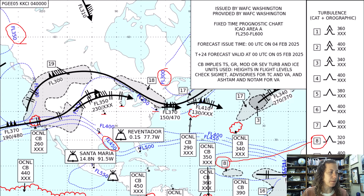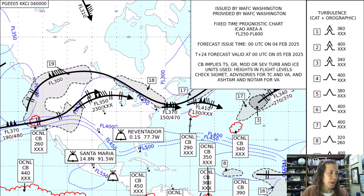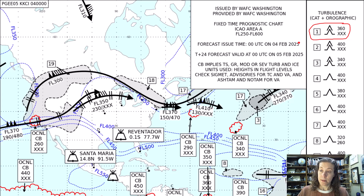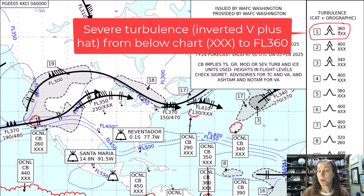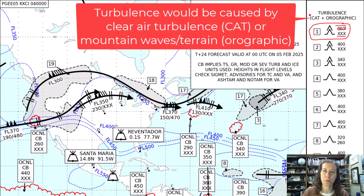The other thing to note about the areas: let's look at area number one. Area one describes more than just moderate turbulence — here we're looking at severe turbulence from somewhere below the chart (that's what XXX means) up to flight level 360. Notice also that any turbulence that is numbered on this chart is either clear air turbulence or orographic — some kind of terrain-driven action or mountain wave activity. They will not put turbulence marks on areas where there is cumulonimbus activity.